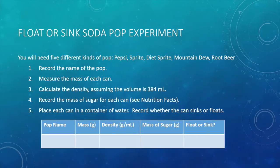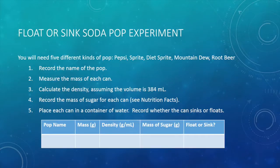Let's go back to our float or sink pop demonstration and complete this experiment. You will need five different kinds of pop, including a diet version of one pop. Record the name of the pop and measure the mass of each can. Next, calculate the density for each can, assuming that the volume is 384 milliliters. Then look at the nutrition facts on each can and record the mass of sugar. Finally, place each can in a container of water and observe which cans sink and which ones float. After you complete these steps, you should have a table with all your data for each can of pop. Pause the video and complete the experiment before moving on.